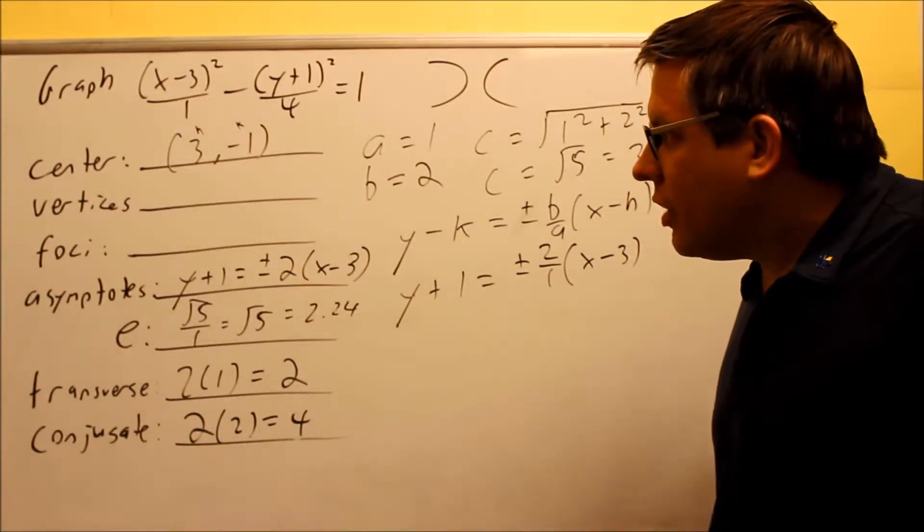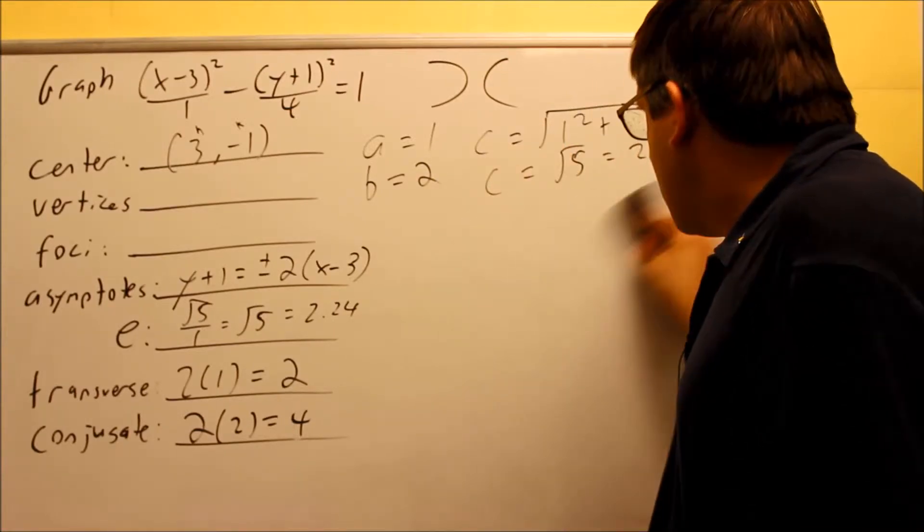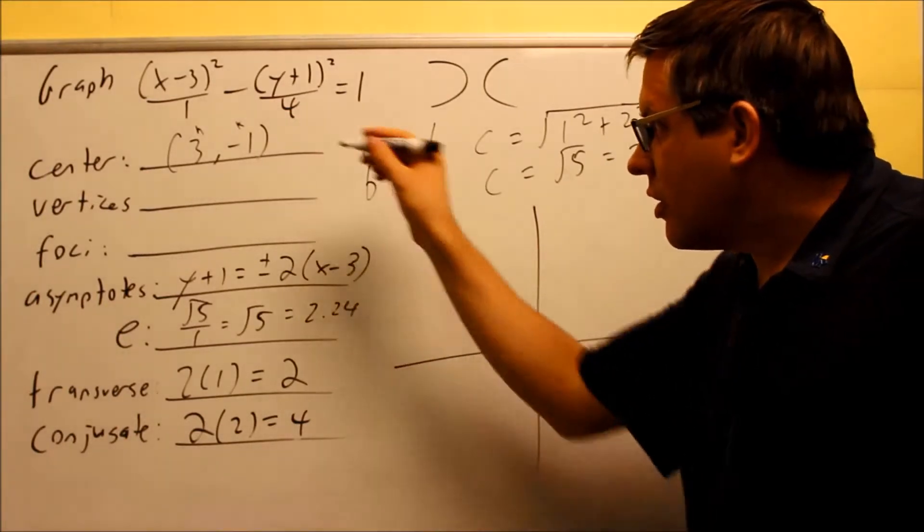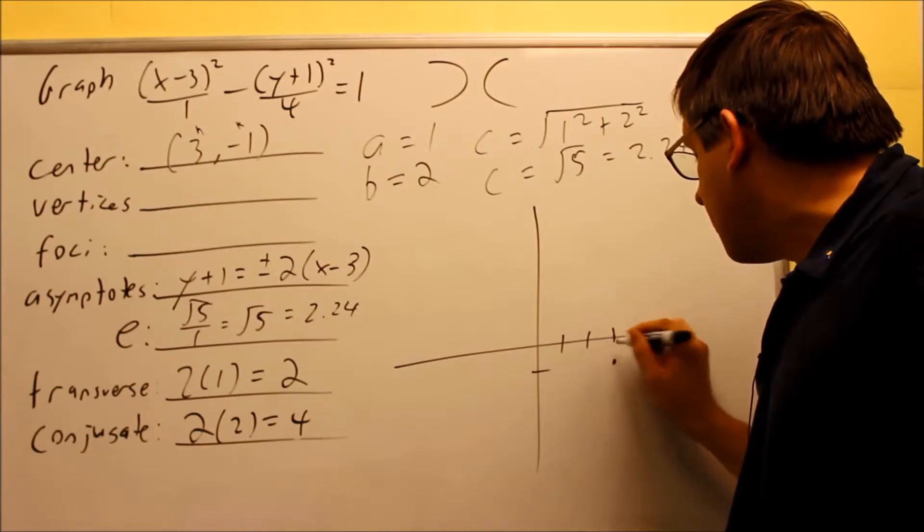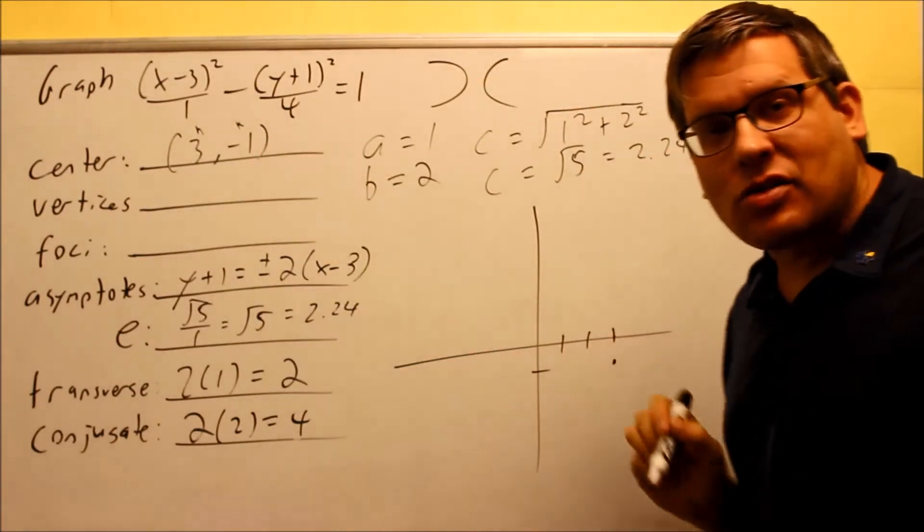We've done all this. Now we're ready to do the vertices and the foci. All right. So we're going to do that right here. The first thing you want to do is you want to plot the center. The center is 3, negative 1. That's right here. We know that it opens up sideways because we have the X that came first.